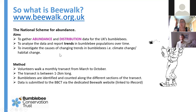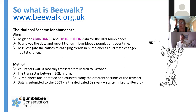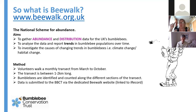BeeWalk can give us early warning signs of decline of a particular species. The method: we ask volunteers to walk a transect - a fixed route - once a month between March and October. It's not quite as onerous as the butterfly monitoring scheme because it's only once a month, not once a week. We ask that the walk is between one and two kilometers long, and every bumblebee you see is identified to species and counted along each section of your transect. Data is submitted to the Bumblebee Conservation Trust via a dedicated website - not the same way as ad hoc records into local record centers.